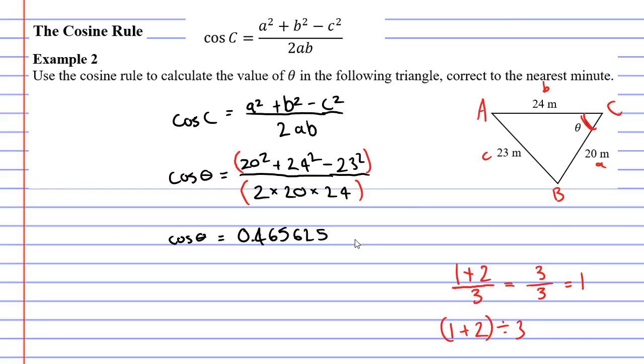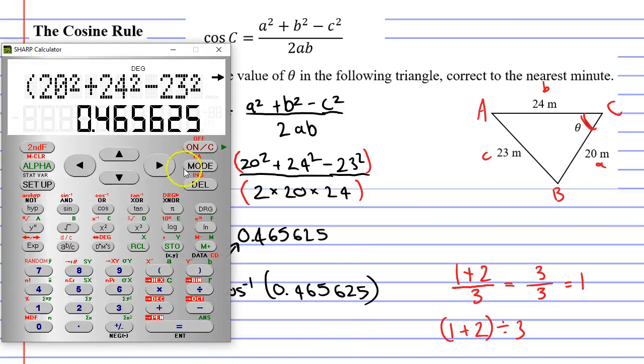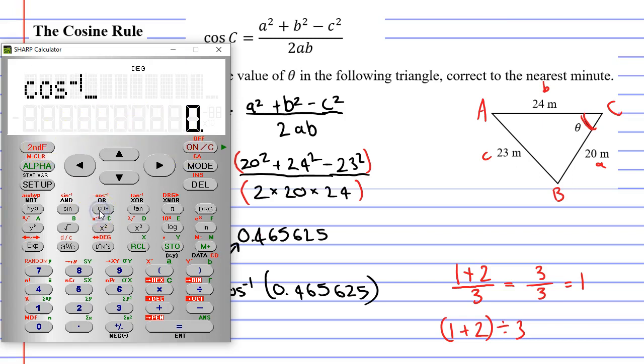Now, if we want to find theta, we need to bring cos to the other side. Theta will equal inverse cos of this number, 0.465625. Close my brackets now. I'll bring up the calculator. It's kept the number on the calculator, so I'm not going to clear it. I'm going to leave the number there. I'm going to go second function cos. And it will remember to put that previous solution in there. Equals. There's our answer. It's about 62 degrees.